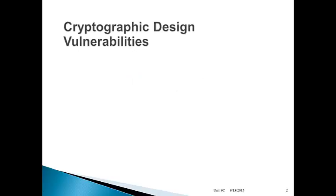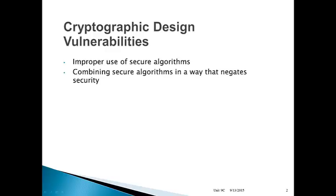Cryptographic design vulnerabilities. When we're talking about cryptography, there are a number of ways that you can do things wrong. You can use secure algorithms in a way that is not proper or not correct. Just because you've got an API to something like AES-256 doesn't mean that a programmer without any training in cryptography can use that thing properly. You can use two secure algorithms in a way that completely negates the security of either one. The combination of two is not always better than one, and it's possible to do things very badly such that two secure algorithms can equal less security, not more.